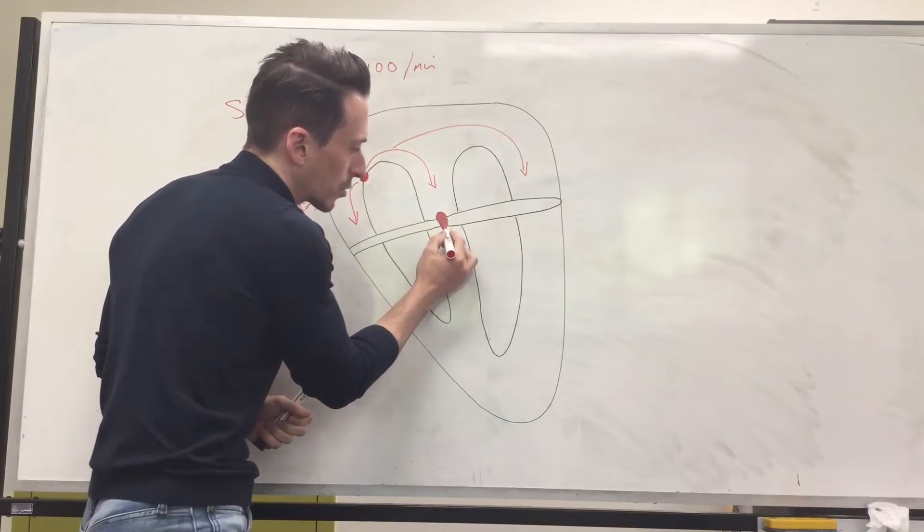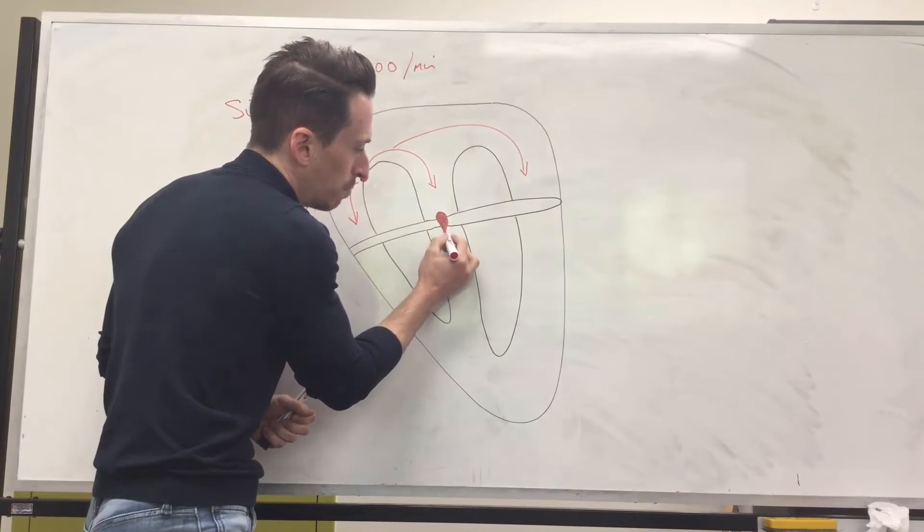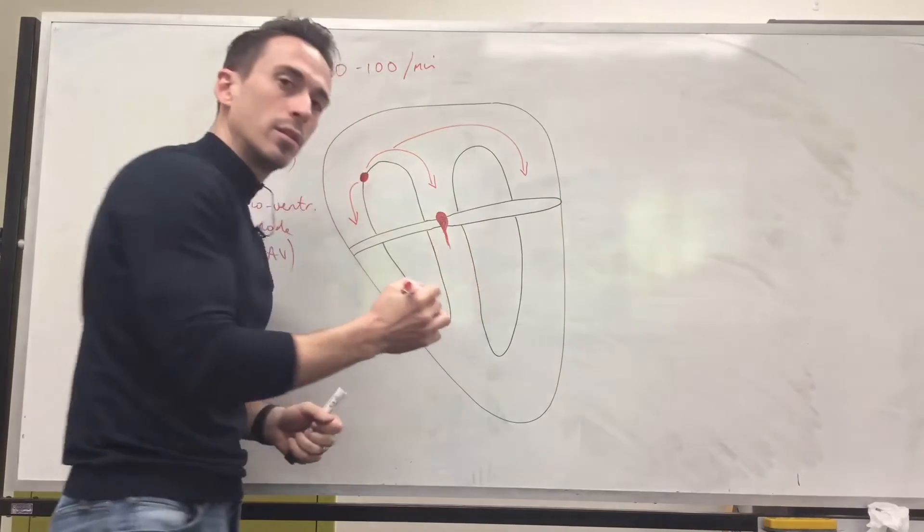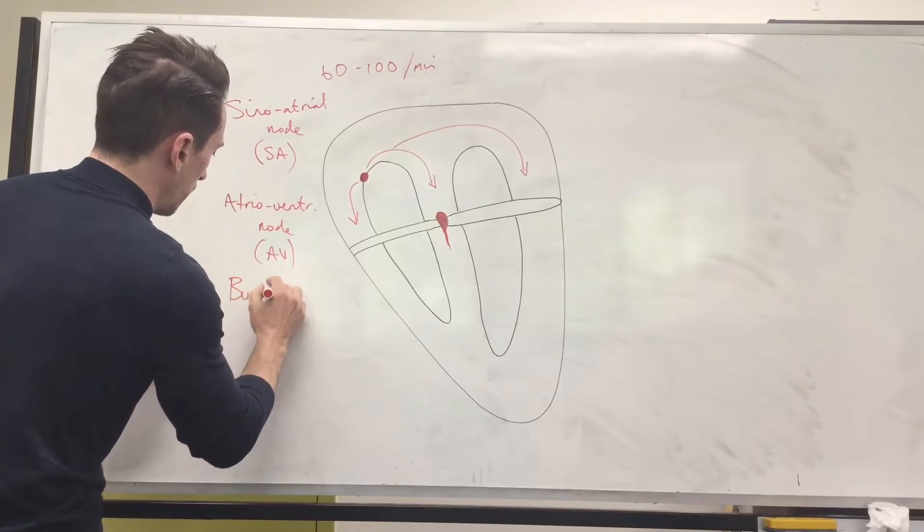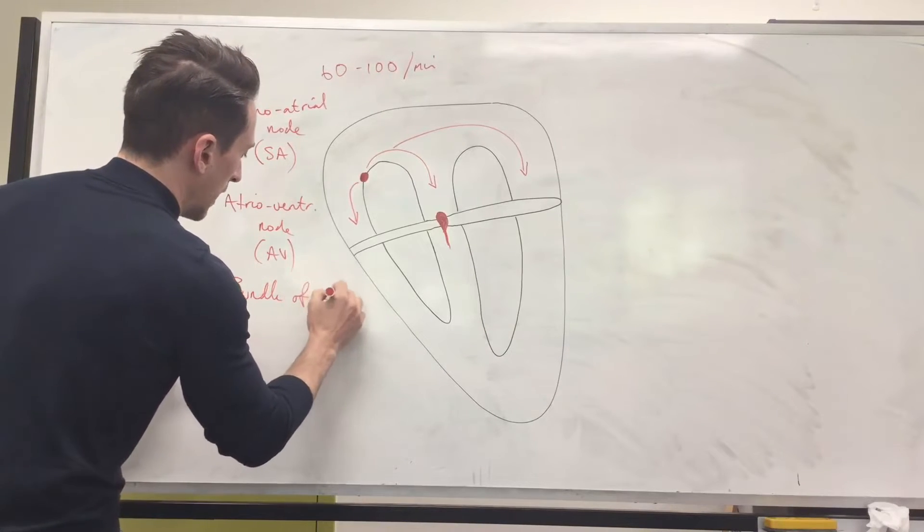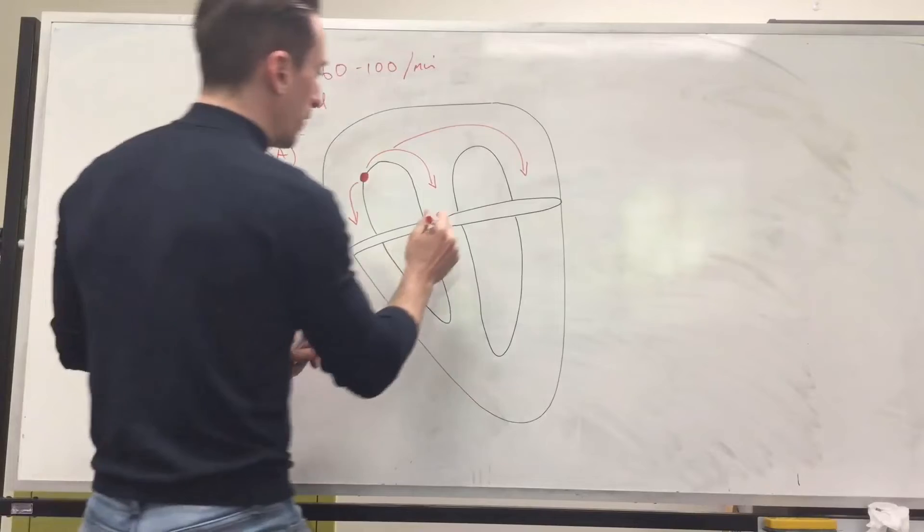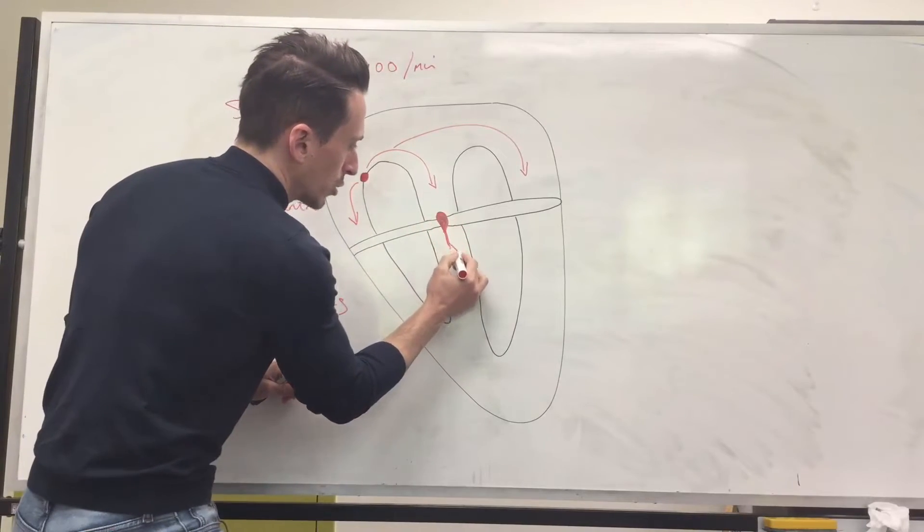And then the AV node sends the electrical signal down this bundle of neurons that we call the bundle of His. Bundle. Of. His. Now the bundle of His branches off.